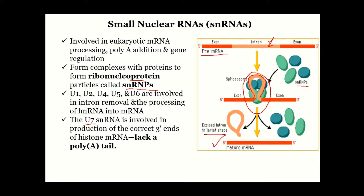There is a special snRNA called U7 that is involved in the production of correct three-prime ends for histones. Histones are proteins that bind to DNA as it is packaged into chromosomes, but they do not have a poly-A tail, so U7 is very important in that pathway. We have another small RNA called microRNAs.